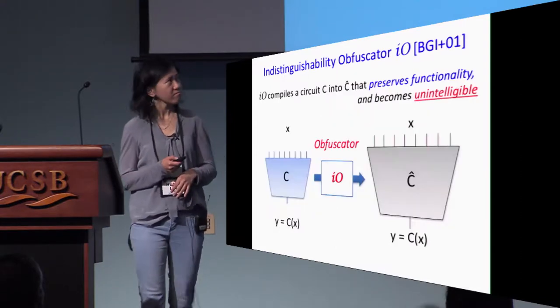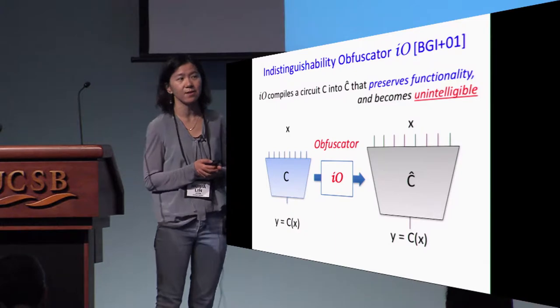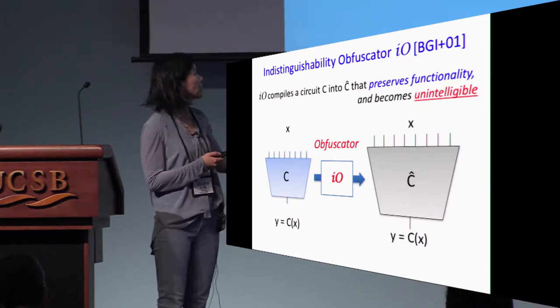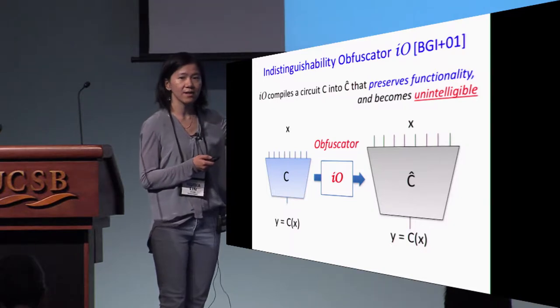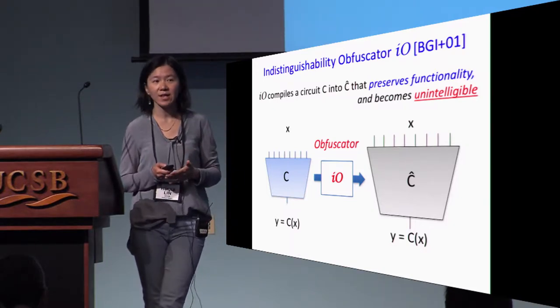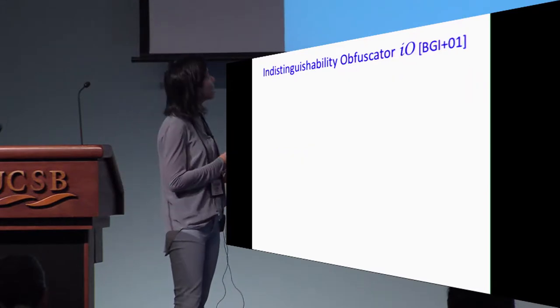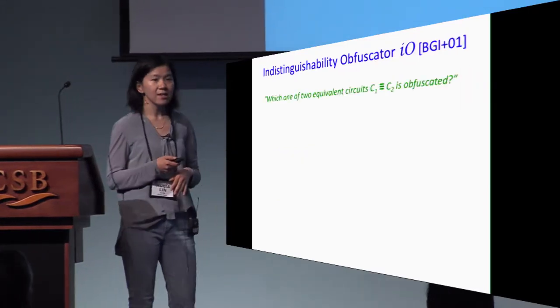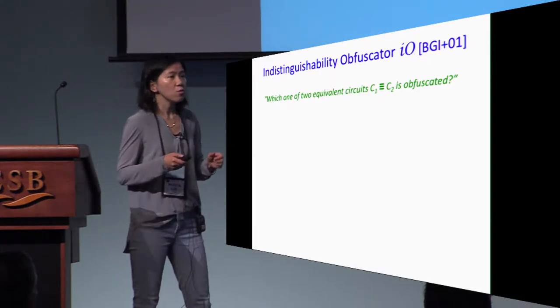First, the goal here is to construct indistinguishability obfuscation. We want to have this type of obfuscators that can compile a circuit into another one that has the same functionality, but now the compiled circuit becomes unintelligible. Here, by unintelligible we mean that the obfuscated circuit should hide one bit of information: which of the following two equivalent circuits is being obfuscated.